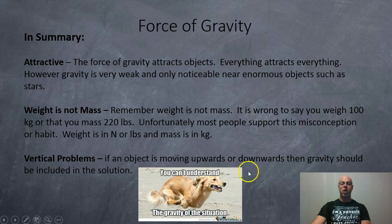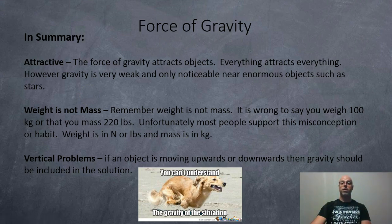Just in a summary here, gravity is attractive. Everything is attracted to everything in the universe. However, gravity is extremely weak. It's actually the weakest force in the universe. And it's only noticeable near enormous objects like stars, planets, or moons. Weight is not mass. Remember, weight is not mass. It's wrong to say you weigh 100 kilos. That's wrong. That's your mass. And it's also wrong to say that you mass 220 pounds. That's not true. That's your weight. But, unfortunately, most people support this misconception or have it. So, remember, weight is in newtons or pounds, and mass is in kilos. And you have vertical problems. If an object is moving up or down, then gravity should be included in your solution somewhere. And I hope this helps with your understanding of the force of gravity or weight.